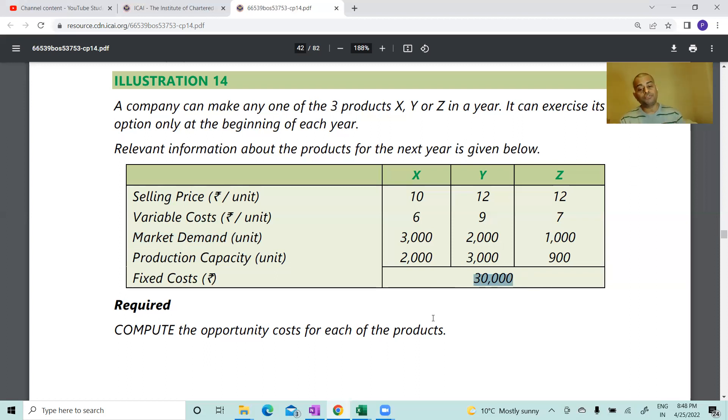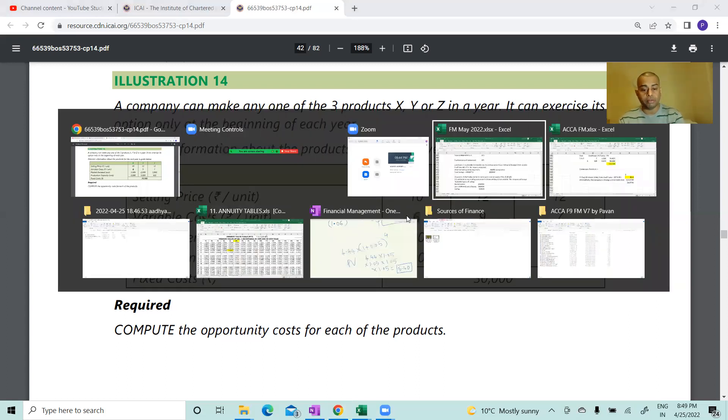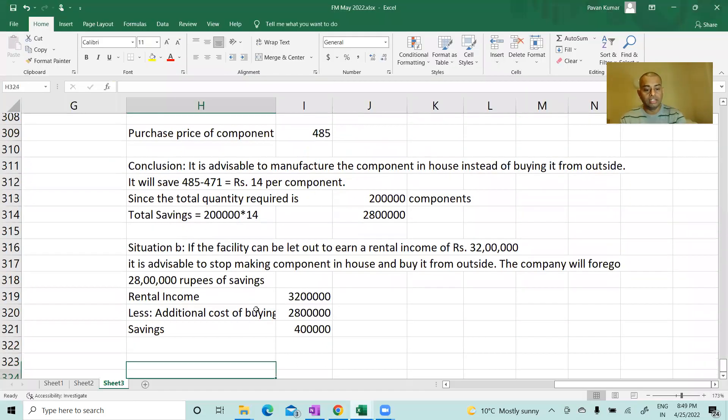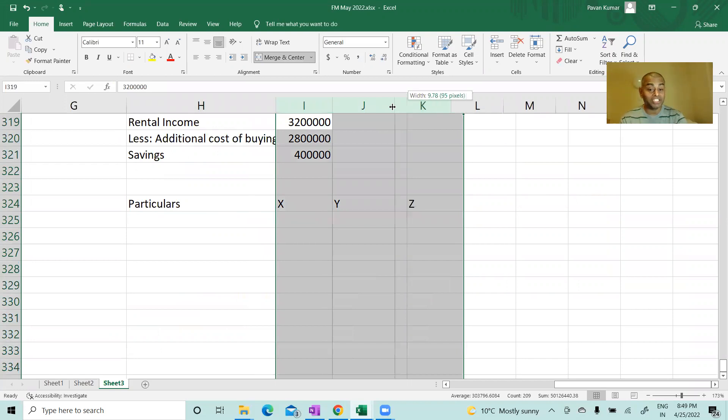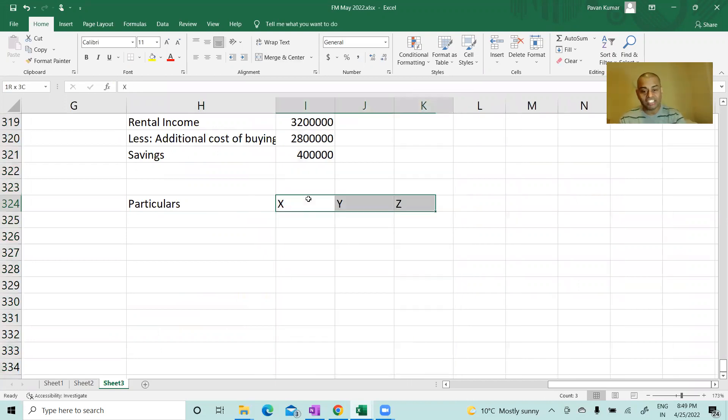Compute the opportunity cost for each of the products. What is the opportunity cost? Contribution foregone. Opportunity cost is the contribution foregone. Now look at product X - what is the contribution? 4. 10 minus 6. So we will prepare like this: Product X, Y, Z. You cannot write the total column because you are not manufacturing all the three, my dear friend. You can manufacture any of these three. So even by mistake don't put a total column.